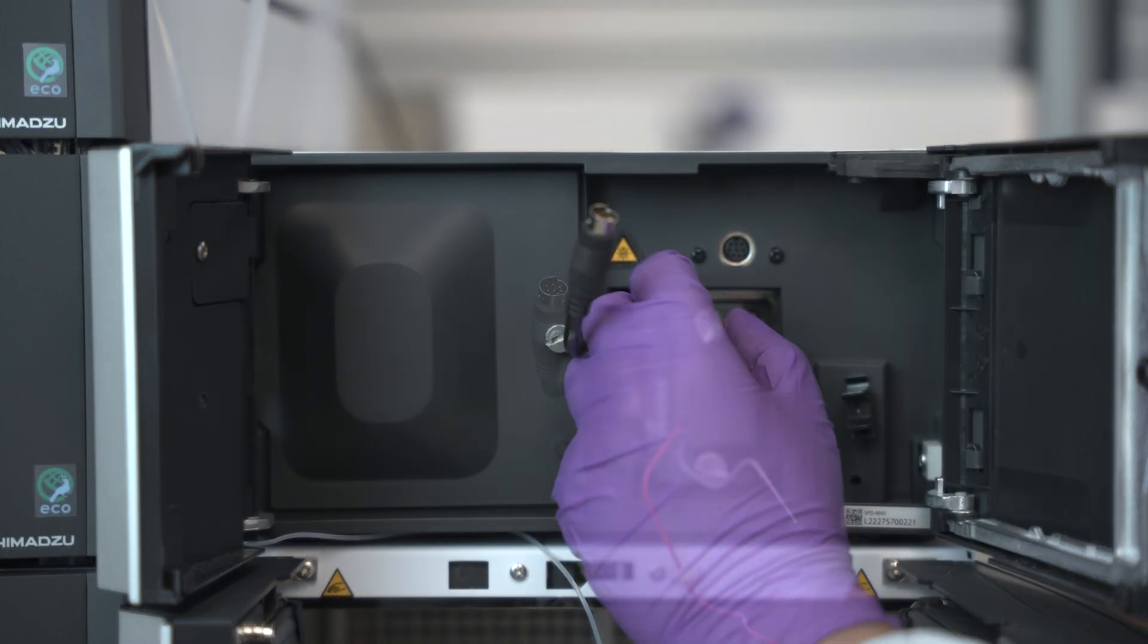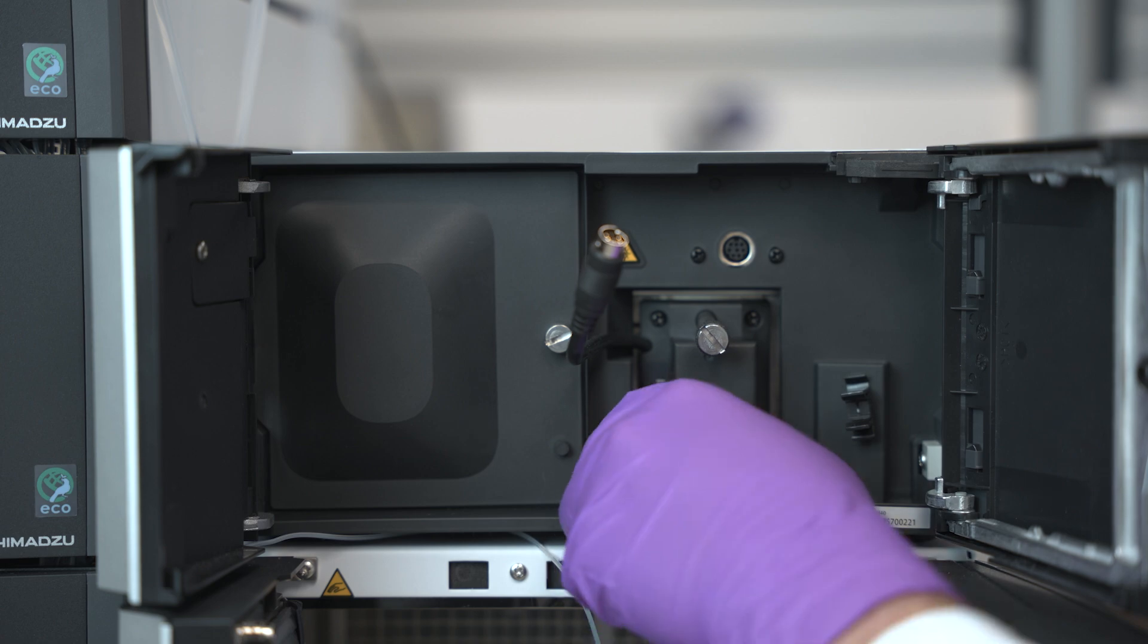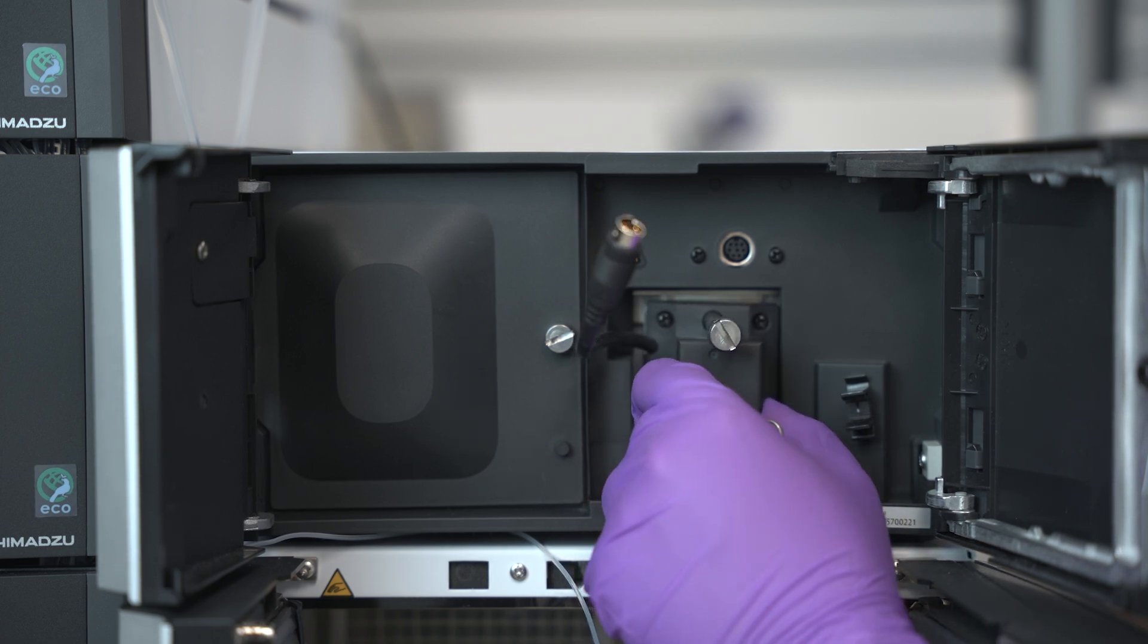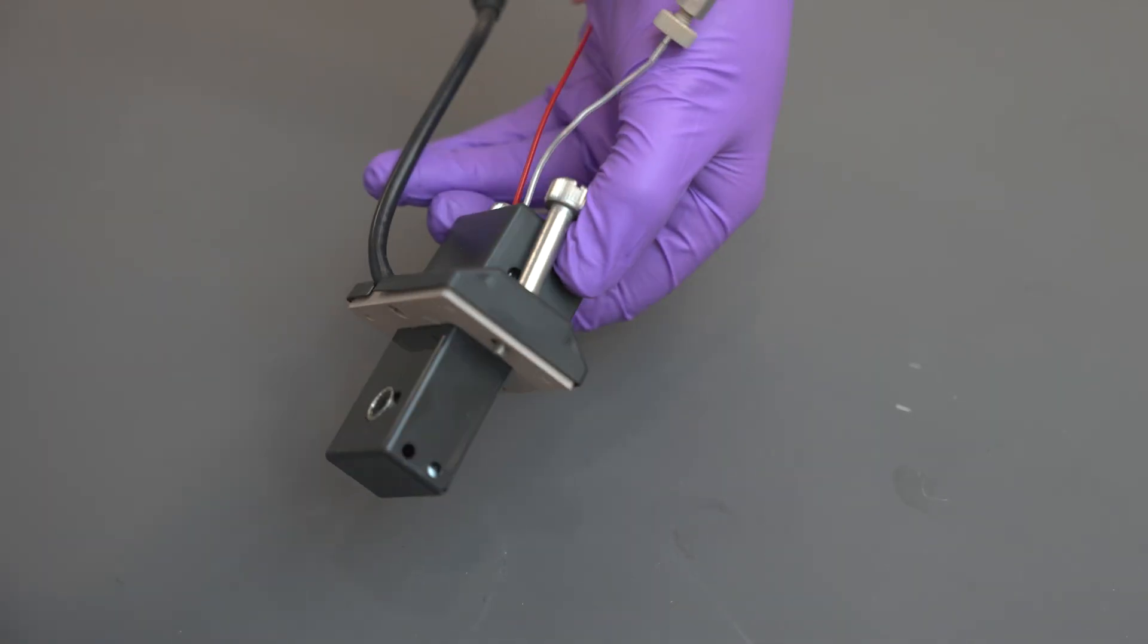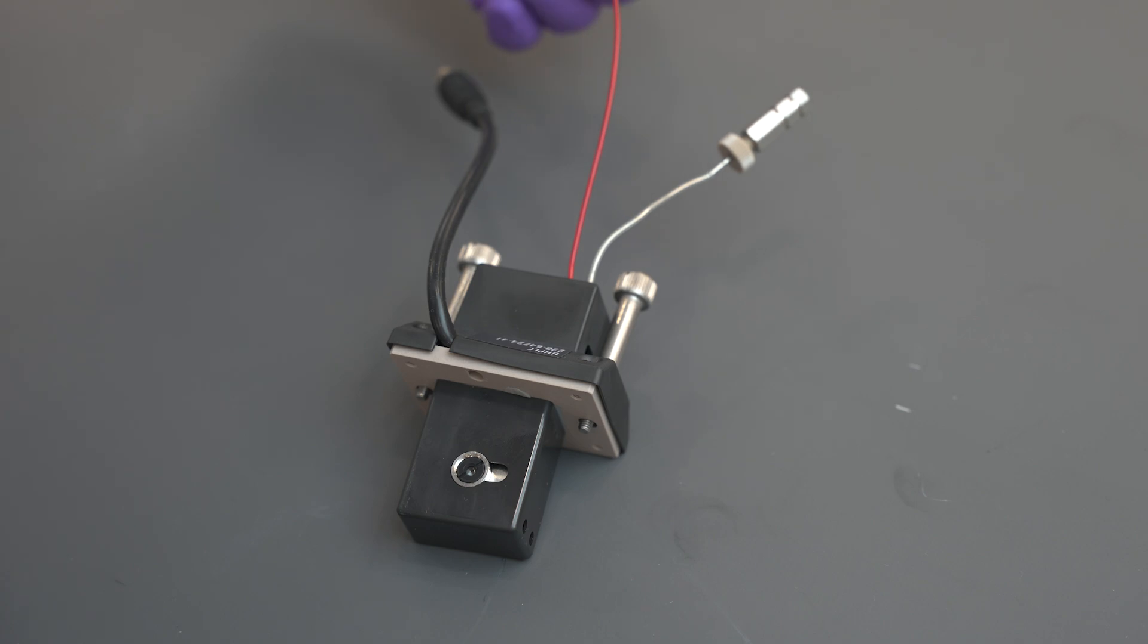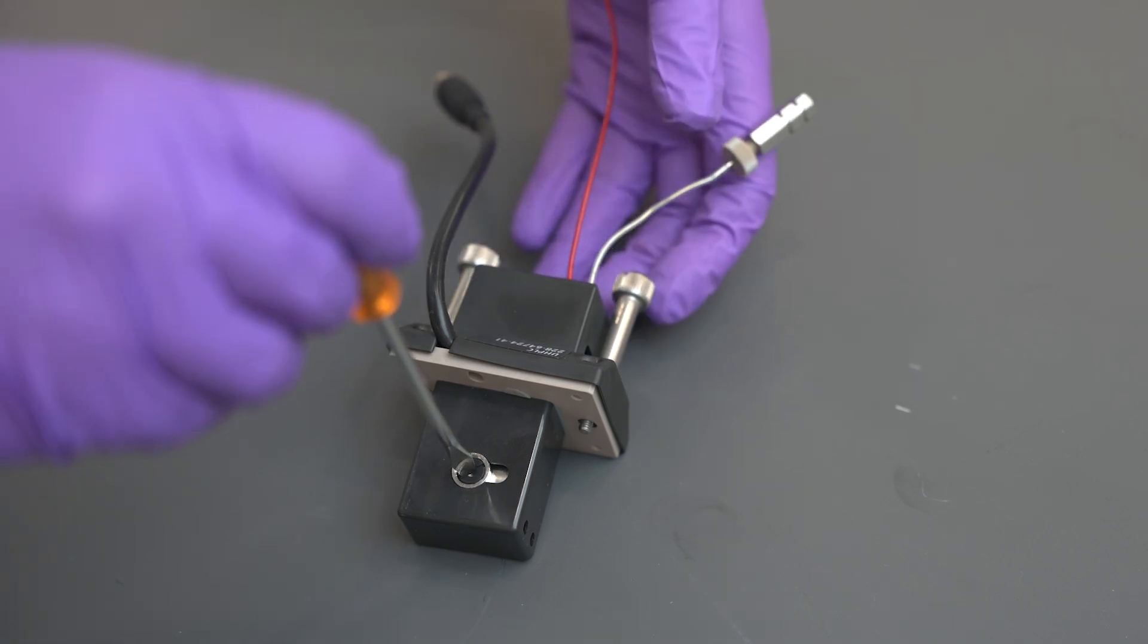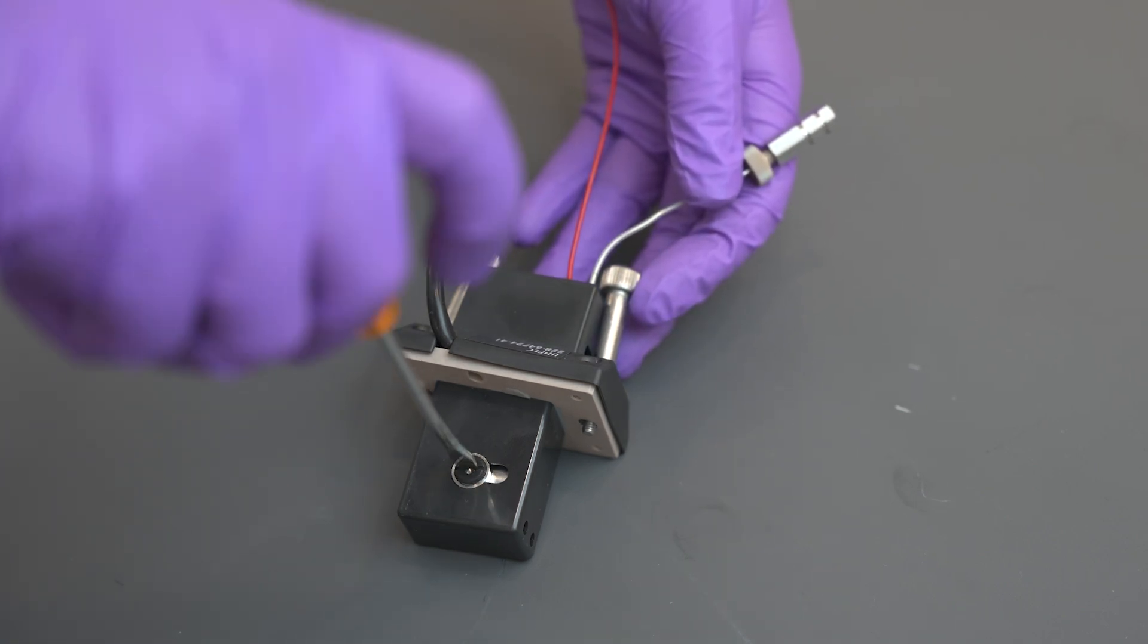Loosen the two cell mounting screws and pull the flow cell out. Remove the left and right set screws using the flathead screwdriver. Take your plastic tweezers and carefully remove the lenses and gaskets.